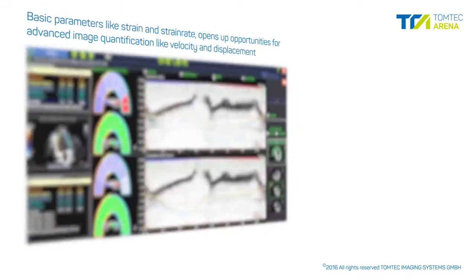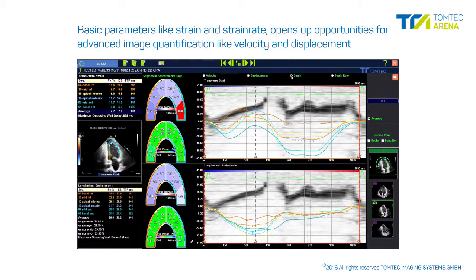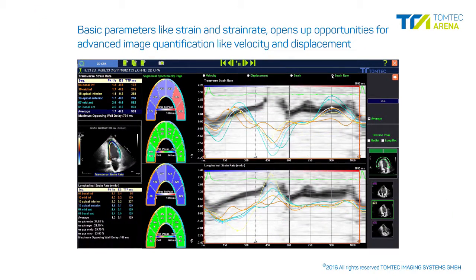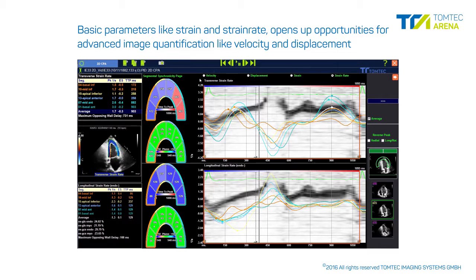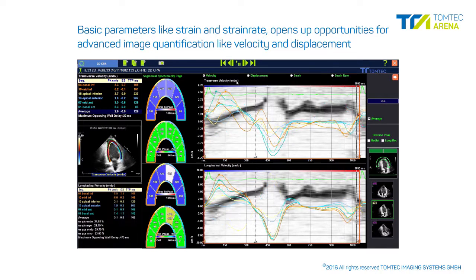Along with basic parameters like strain and strain rate, 2D CPA opens up new opportunities for advanced image quantification with measurements like velocity and displacement.